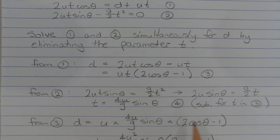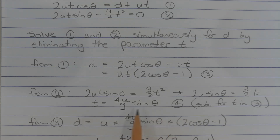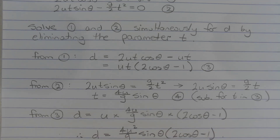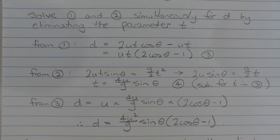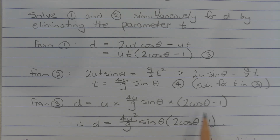We're going to substitute for t in equation 3. From equation 3, d equals u times (4u/g) sin(theta), which represents t, times (2 cos(theta) minus 1). Simplifying this expression, we get d equals (4u squared / g) times sin(theta) times (2 cos(theta) minus 1).